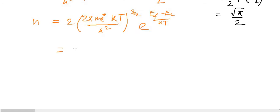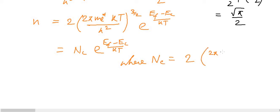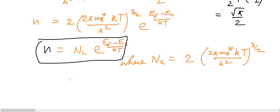This can be written as N equals N_C times e^((E_F minus E_C) / kT), where N_C equals 2·(2 pi m_e* kT / h^2)^(3/2). This equation gives us the number of electrons present in the conduction band of an intrinsic semiconductor.